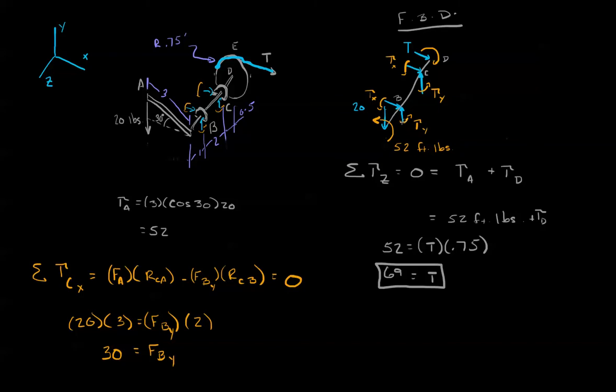The other force that's going to cause a torque in the x direction is the B force. So the force we're saying applied at A times the radius from C to A minus, because it's in the negative direction, the force at B in the y direction times the radius from C to B equals zero.